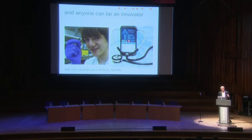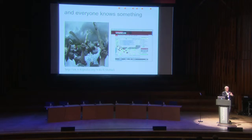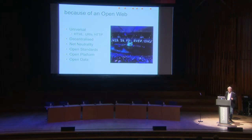Many of you here may have participated in these citizen science projects. The extraordinary thing is that amidst all those volunteer efforts, real science gets done and real insights are made — Hanni van Ackles discovering a new kind of galaxy. Anybody can be an innovator on this open web. Jack Andraka used a range of resources available to him to build a very cheap paper-based sensor for detecting various forms of cancer. And everyone knows something — this is the example of Ushahidi, where using a simple but widely distributed system of texting and geographic placement of reports on a map, people were able to report on the Kenyan riots. This is all because of an open web — a universal web, decentralized, supporting net neutrality with open standards.